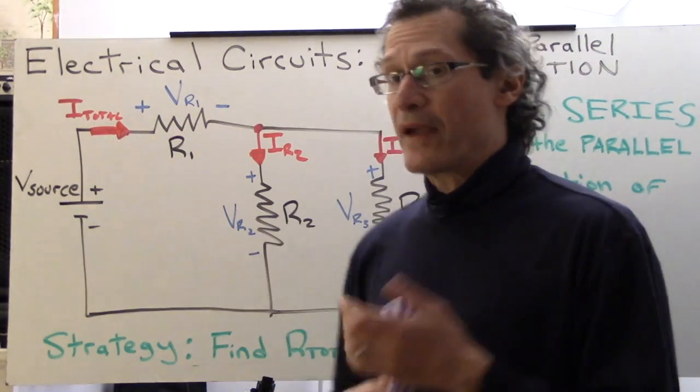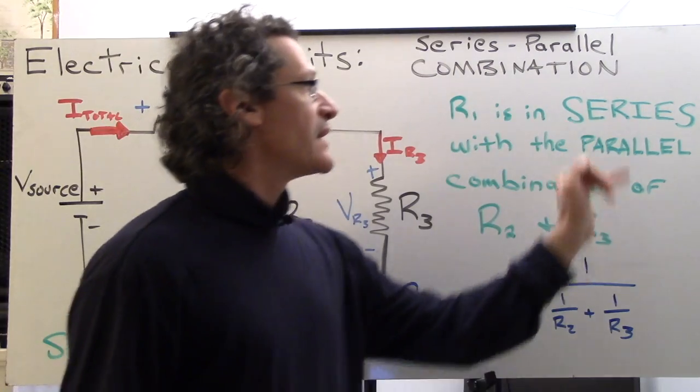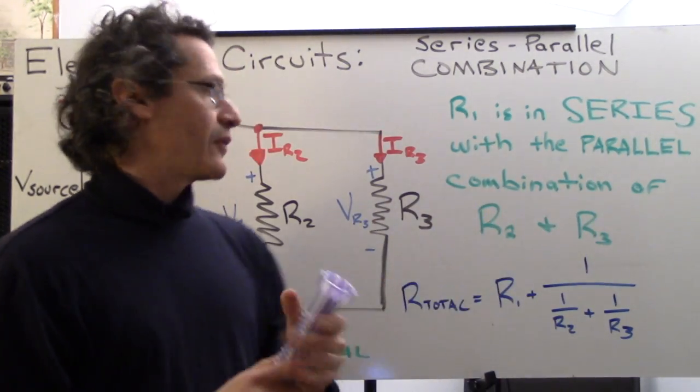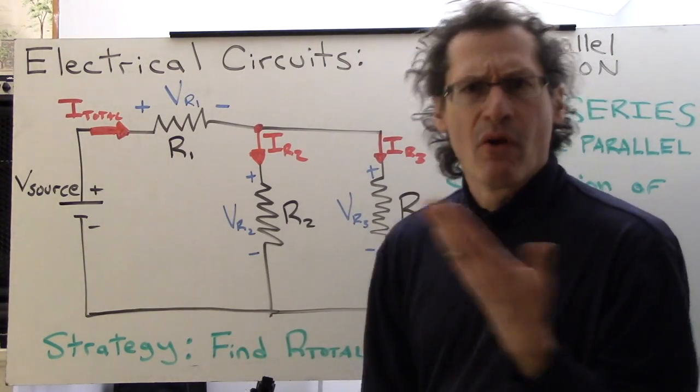So why is this a series parallel combination circuit? Because R1 is in series with the parallel combination of R2 and R3. We look at it over here, R2 and R3 are definitely in parallel. Why is that? Because they create a single loop between them.